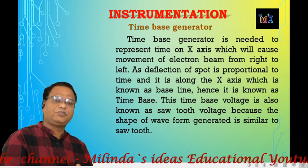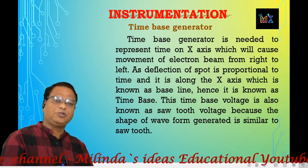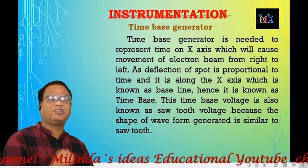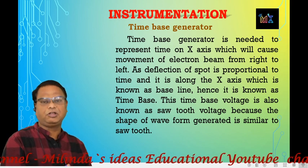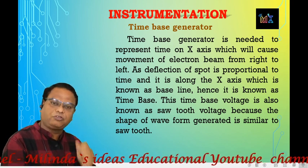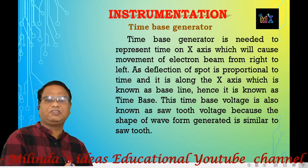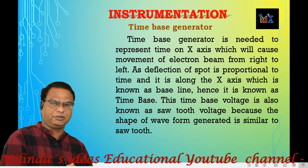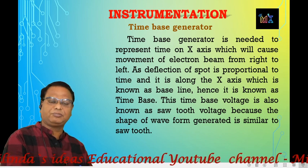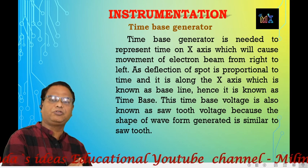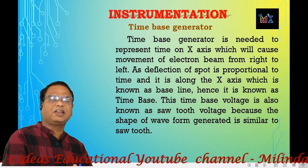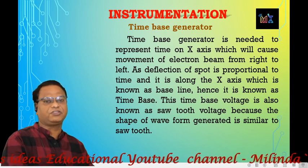What is the definition of CRO? CRO is defined as: it is basically a very fast x-y plotter capable of plotting the input signal versus time, or versus another signal. It is used to plot the input signal versus another signal or versus the time.